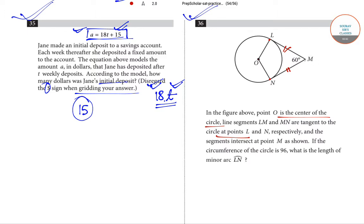The LM and MN segments intersect at point M, where the measure of angle LMN is 60 degrees. If the circumference of the circle is 96, what is the length of the minor arc LN? You have to find the length of this arc.